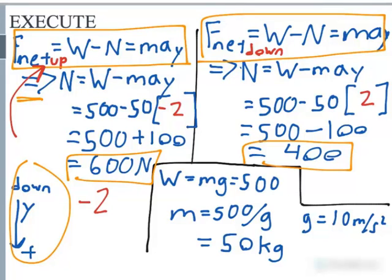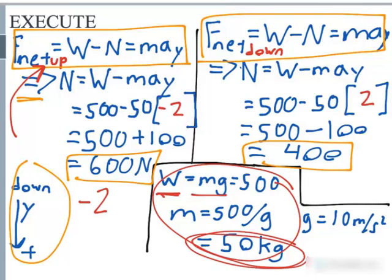Now I also went ahead and solved for the actual mass here. Let me go ahead and undo that in this direction. I got the weight, which equals mass times gravity, which we were given as 500 newtons. I went ahead and solved for the variable m and I came up with 50 kilograms here. And I plugged it in for the mass in the previous steps that we just looked at. I also used gravity as 10 meters per second squared, just to simplify this problem a little bit.